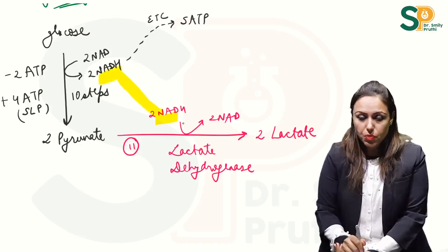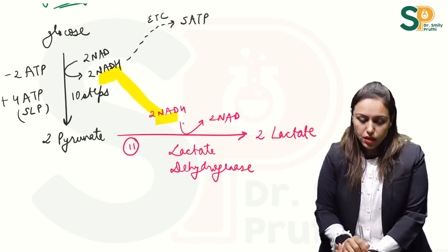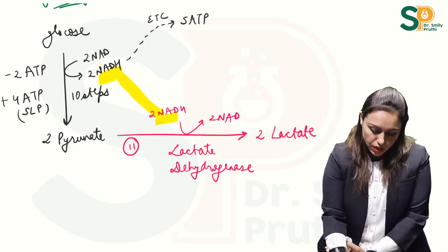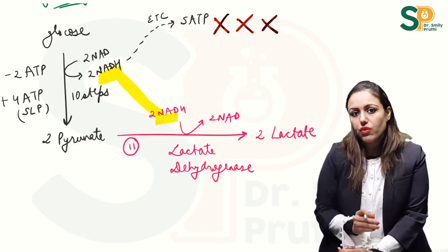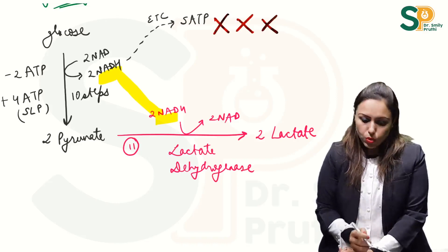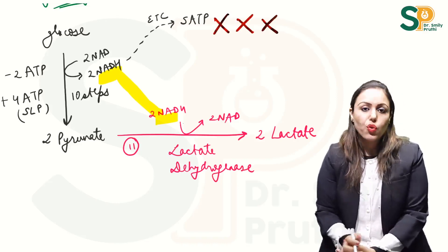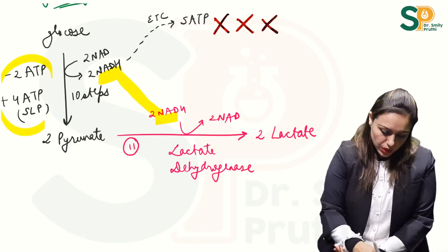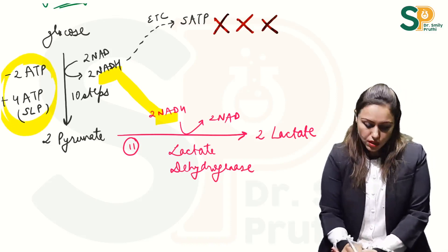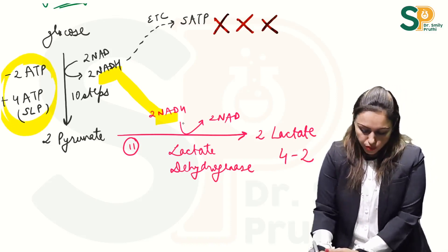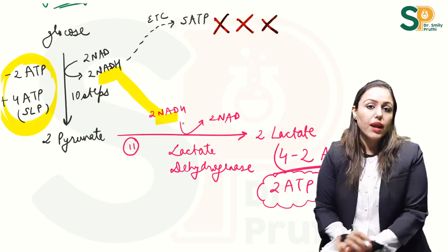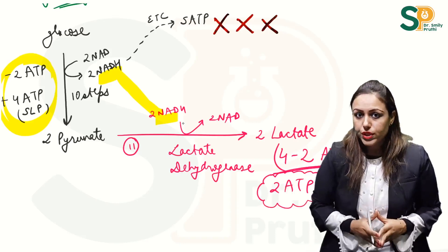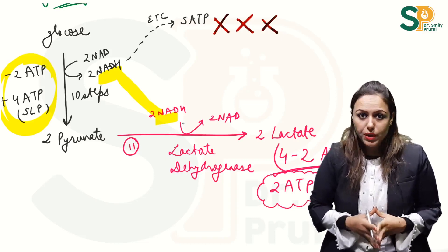And these 2 NADH are used from here. These 2 NADH are used in this last step to give 2 NAD again and therefore we are not getting these 5 ATPs in case of anaerobic glycolysis. So now the energetics in case of anaerobic glycolysis will be only this much that is 4 minus 2 ATPs, 4 minus 2 ATPs, so this is 2 ATPs in case of anaerobic glycolysis. And I already told you 7 ATPs in case of aerobic glycolysis.